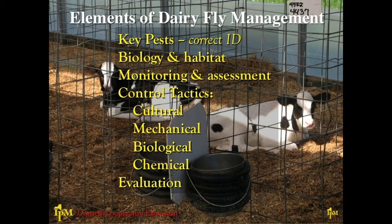In this module, we'd like to look at the integrated pest management approach to minimizing fly problems in and around the dairy facility area. We'll develop an IPM approach using five steps. The first is correct identification of the pests — the foundation for IPM efforts. If we have identified it correctly, there's a lot of information we can employ to minimize population development. We'll then look closely at biology and habitat — what are the preferences of the insect and what does it need to develop a population?